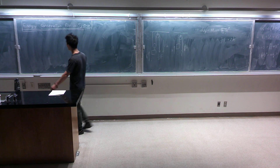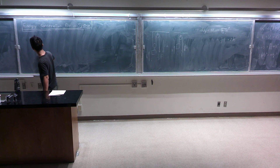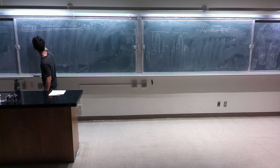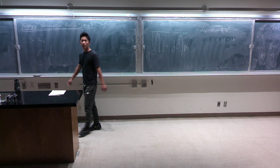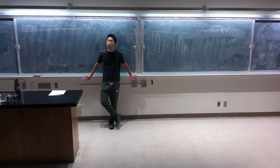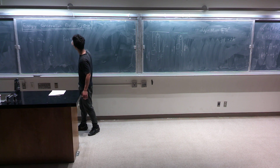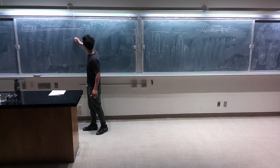Let's start with kinetic energy. If I have n particles, they are all moving, having speeds v1, v2, up to vn. This is my system of n particles. Then the total kinetic energy of the system is literally just the sum of all the kinetic energies of the individual particles.